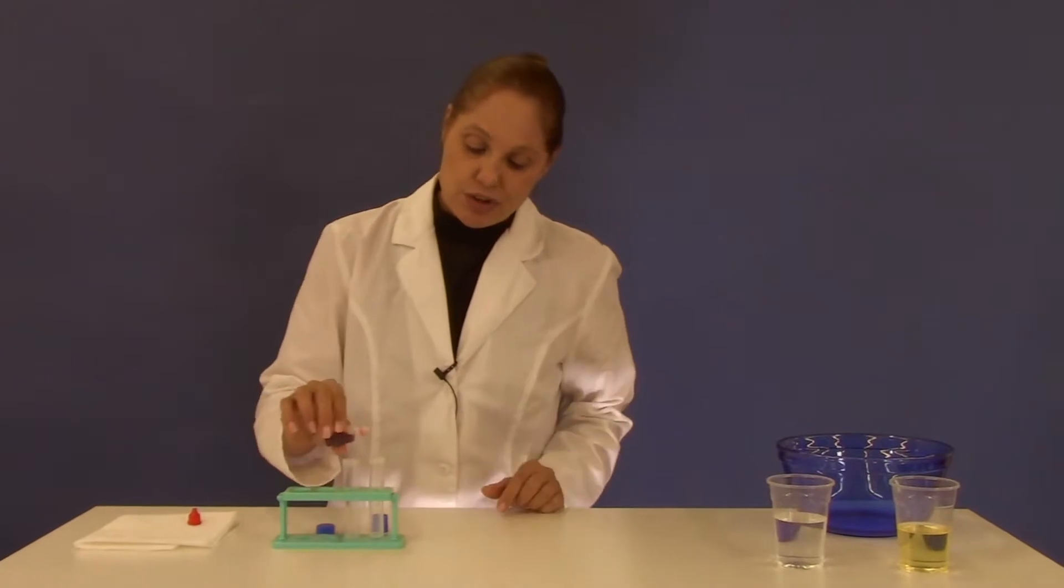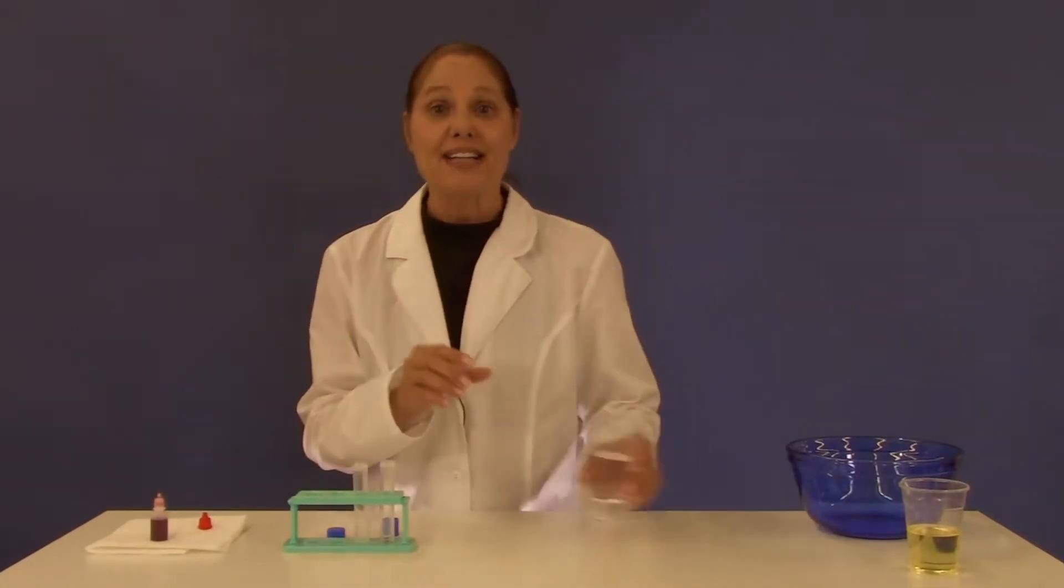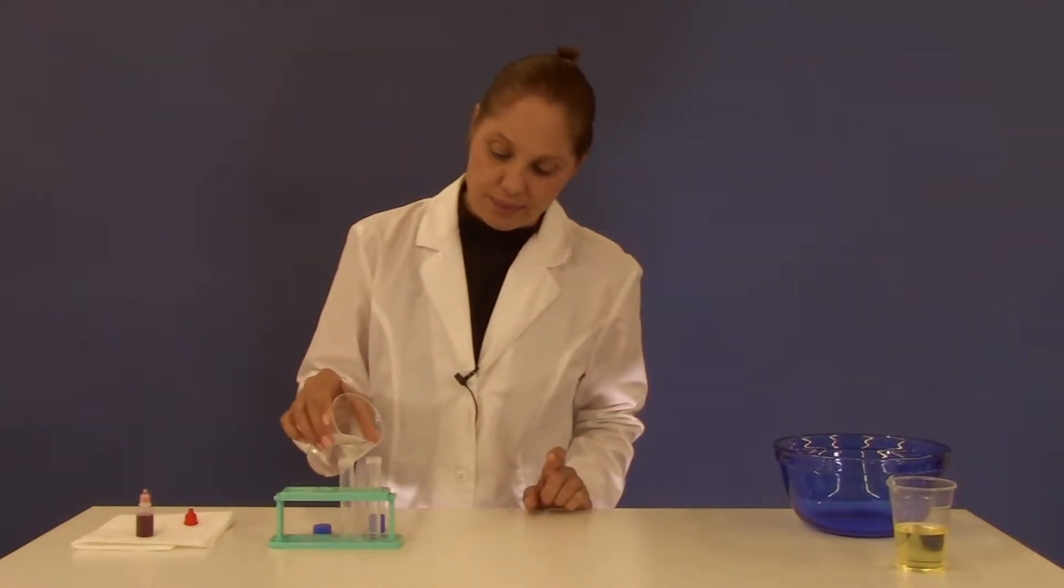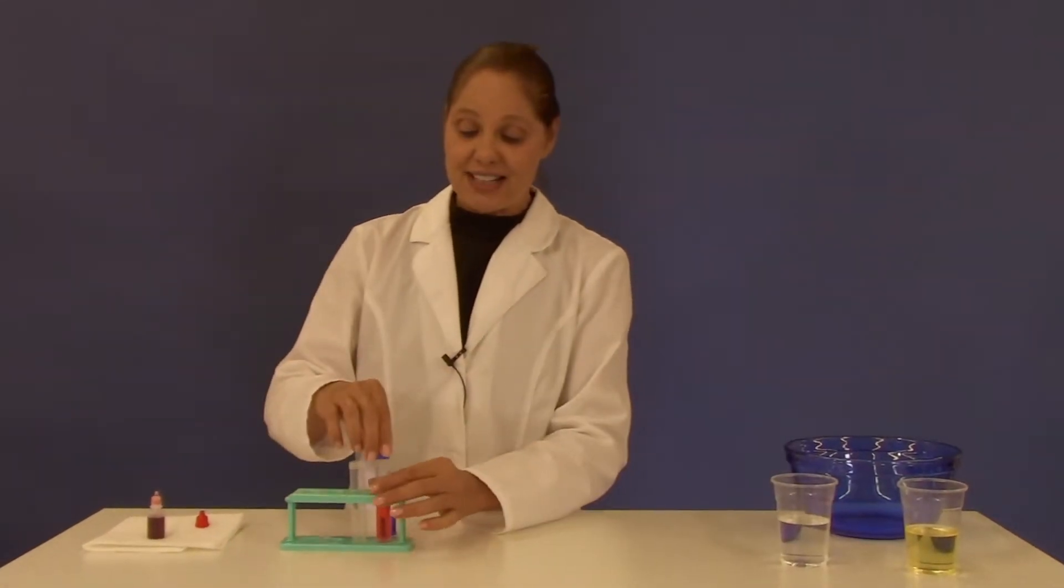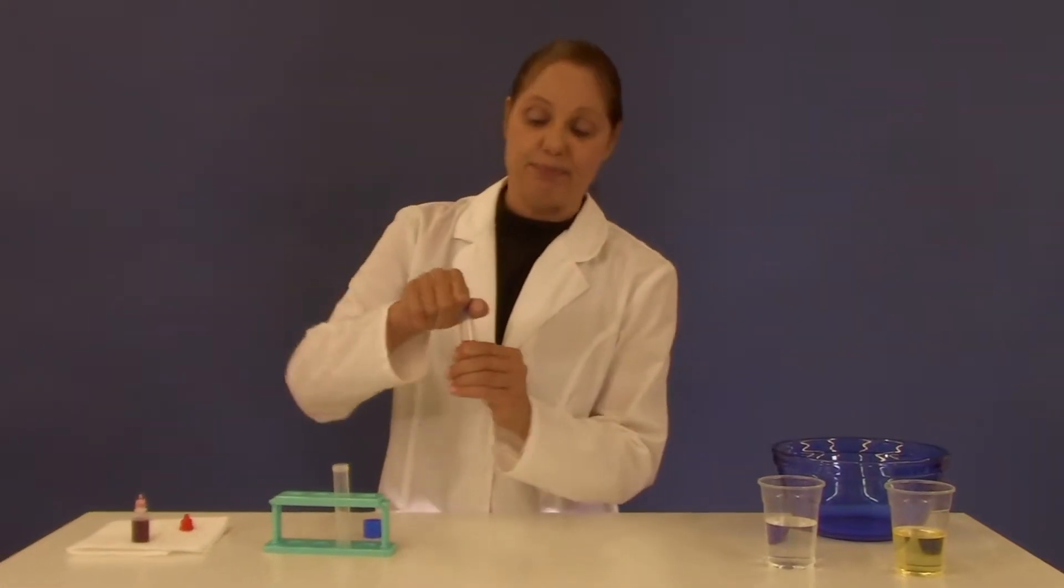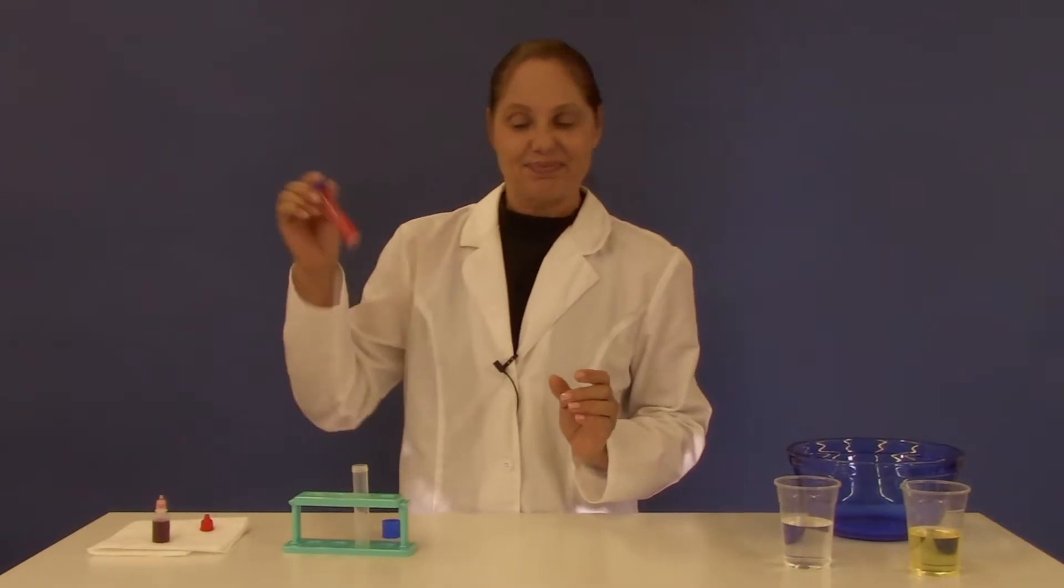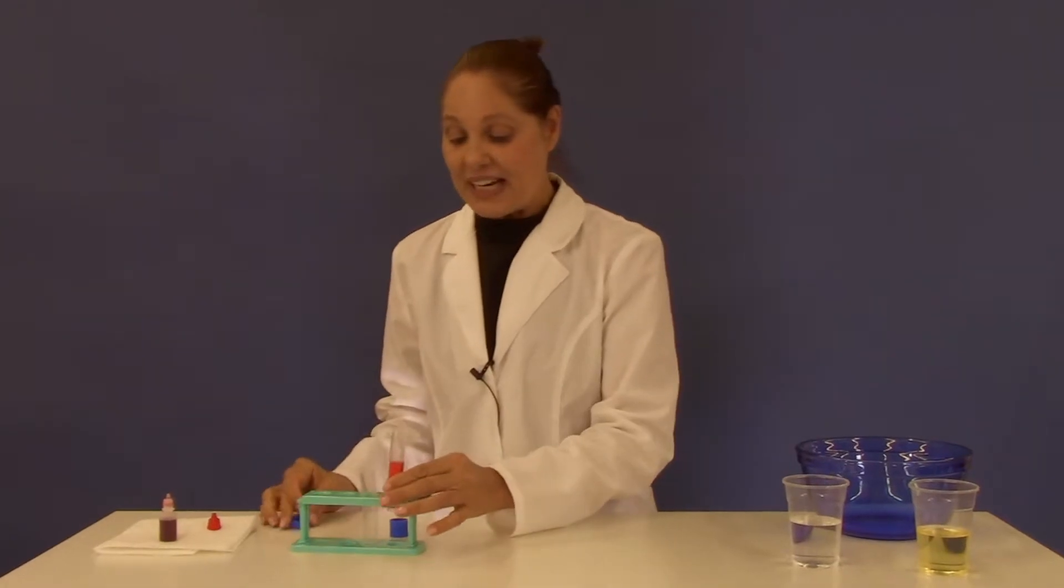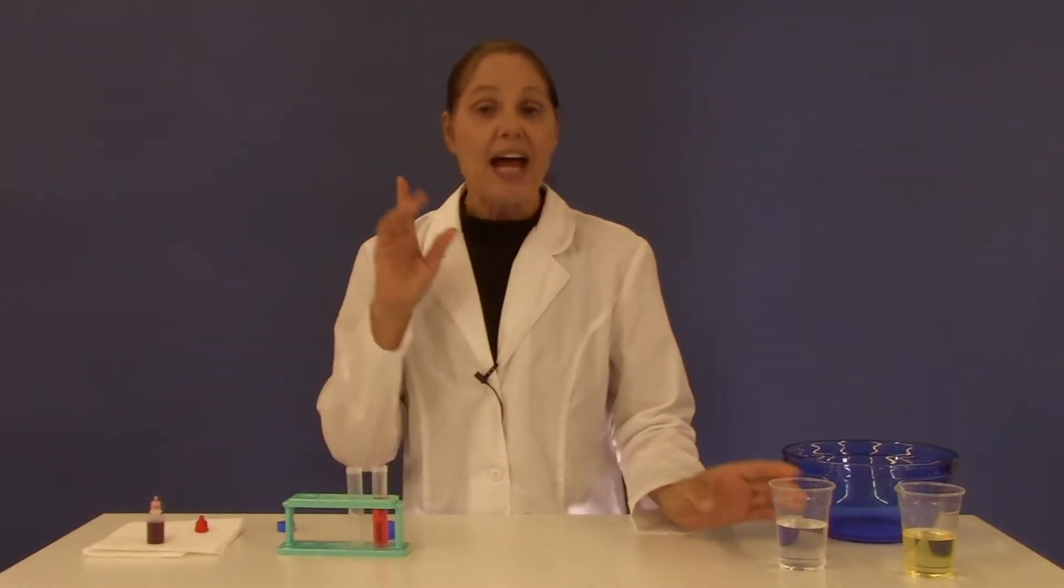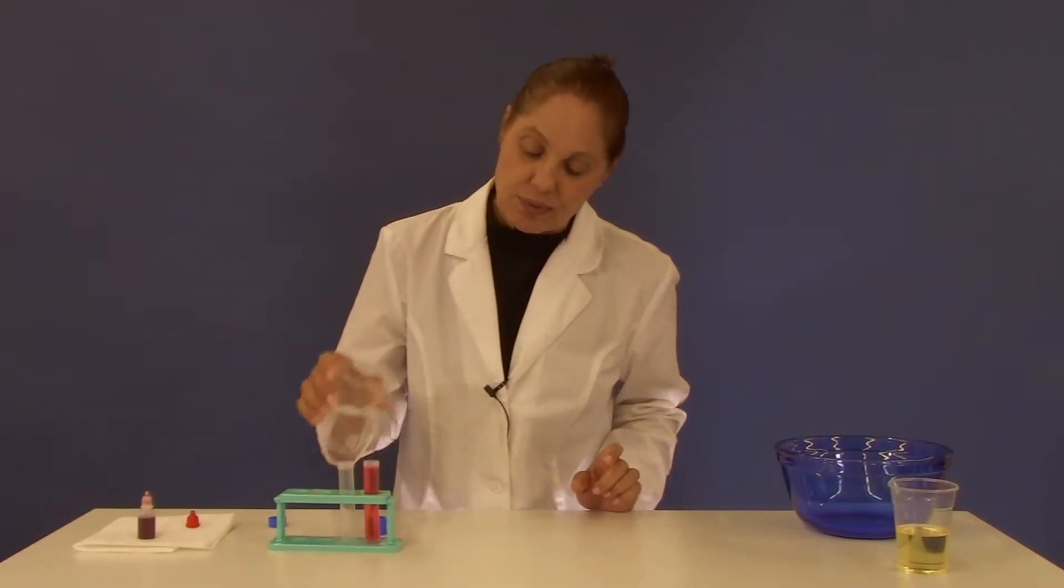In test tube number one, I want you to add two to four drops of your coloring agent. Then fill that test tube halfway with water. Cover the test tube and then shake it up. After you've done that, add more water so that the test tube is filled completely.